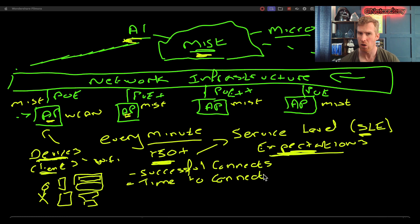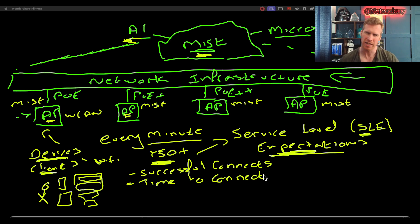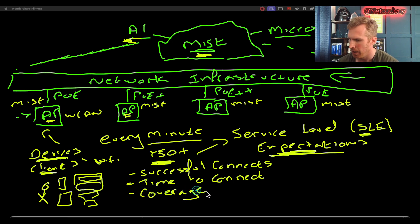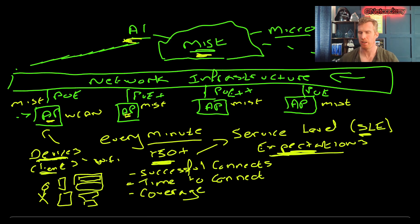The second SLE is Time to Connect. Once a user has connected successfully, this gives insights into how long it took to connect to the Wi-Fi network. The operator defines what's acceptable — one second, two seconds, three seconds — whatever their expectation is. If that expectation is not met, the AI gives insights into why, how, and what you need to do to resolve it.